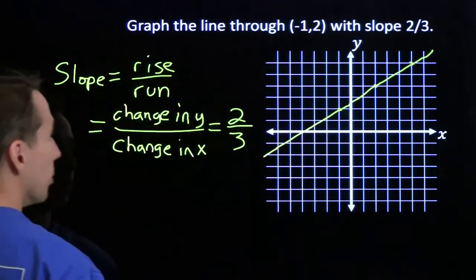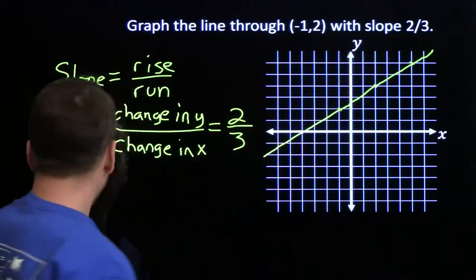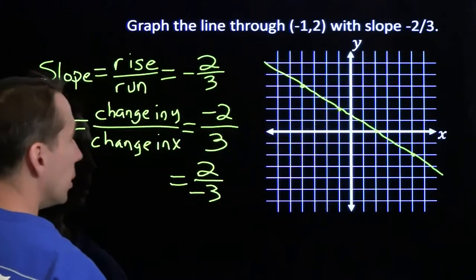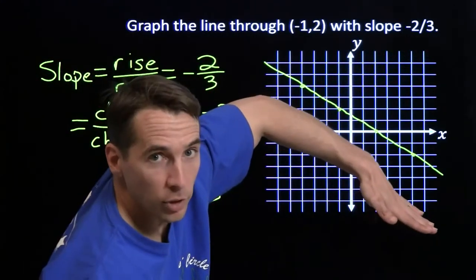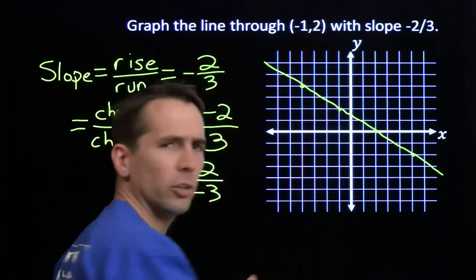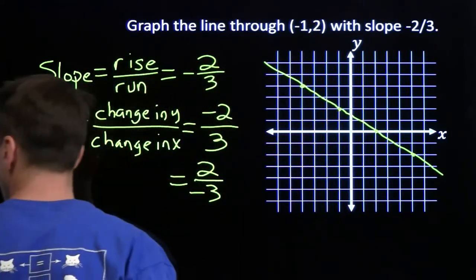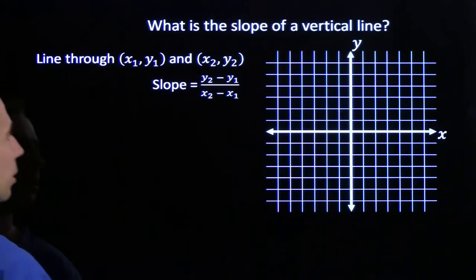So we see: positive slope means upward sloping, negative slope means downward sloping. What about a vertical line? What's the slope of a vertical line?